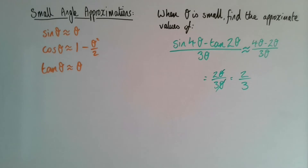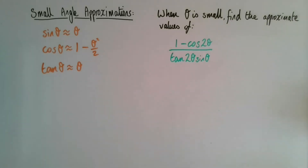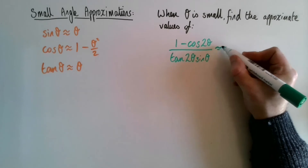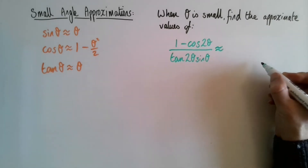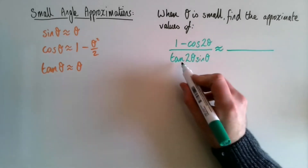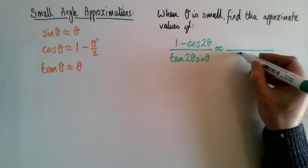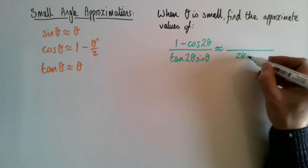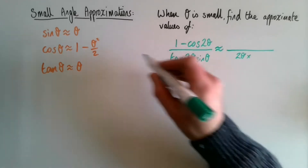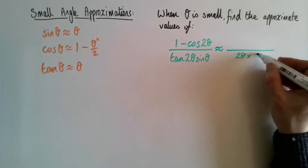Have a go at this next one. Once you've paused and given it a go yourself, the first thing we do is say it's nearly equal to, and then I'll do the bottom part because it looks easier. Tan 2θ will just be 2θ, and that's going to be multiplied by 8, and sin θ is approximately equal to θ.